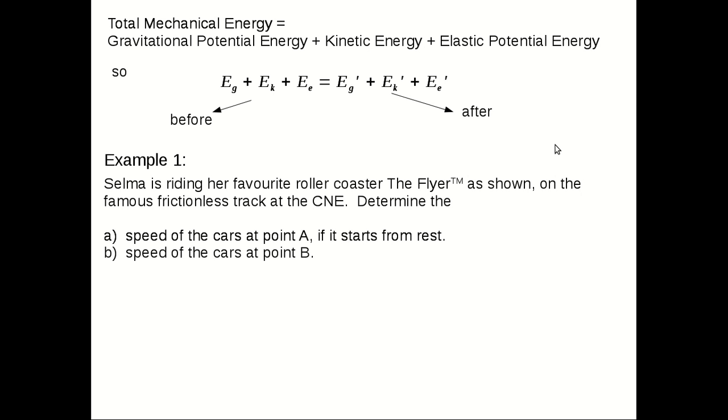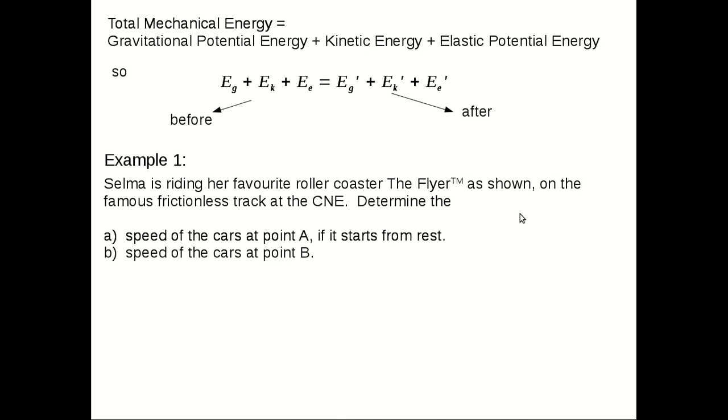We'll say that it has a frictionless track, which makes it more fun. We want to determine the speed of the cars at point A if they start from rest, and the speed of the cars at point B. So here's what the coaster looks like. We can see the cars at the start, and we can see point A and point B. We've got some heights measured here, which we'll use in our calculations.